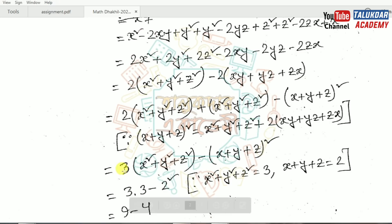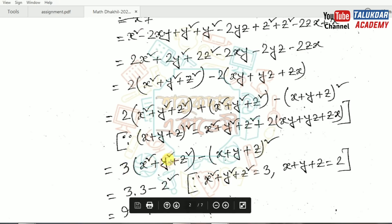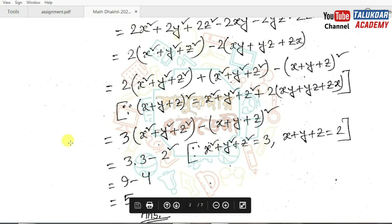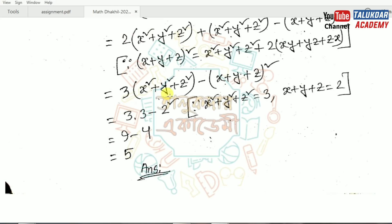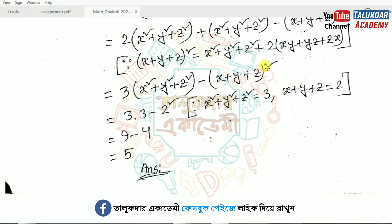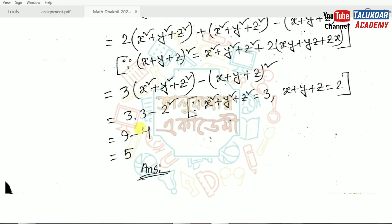The result is 3 times (x + y − z) whole square, and question 4 equals 5. Alright.